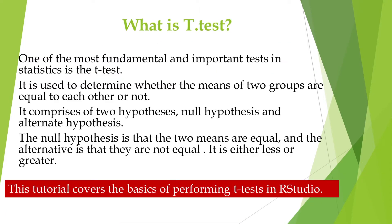What is a t-test? One of the most fundamental and important tests in statistics is the t-test. It is used to determine whether the means of two groups are equal to each other or not. It comprises two hypotheses: null hypothesis and alternate hypothesis. The null hypothesis is that the two means are equal, and the alternate hypothesis is that they are not equal — it is either less or greater.